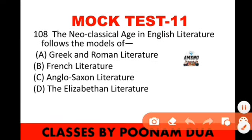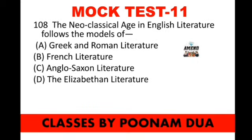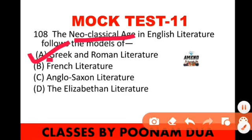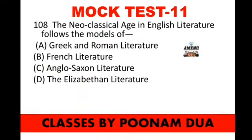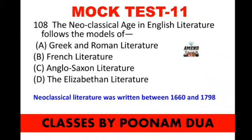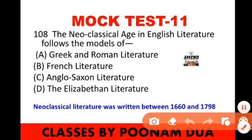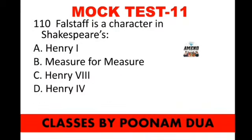Question 108: The Neoclassical Age in English Literature follows the models of Greek and Roman literature — that is option number one, the correct answer. Neoclassical poets closely followed Greek and Roman literature. The Neoclassical Age was between 1660 and 1798, and its time period is broken into three parts: the Restoration Period, the Augustan Period, and the Age of Johnson. Writers of the Neoclassical Period tried to imitate the style of Romans and Greeks.